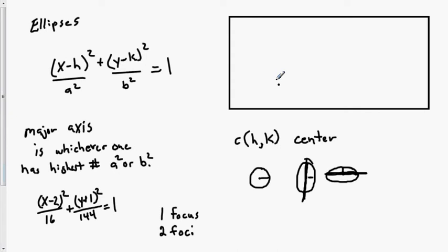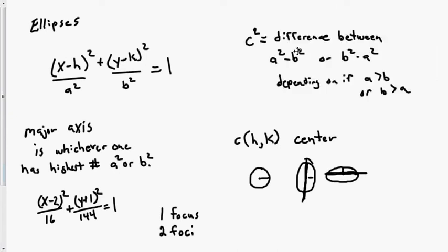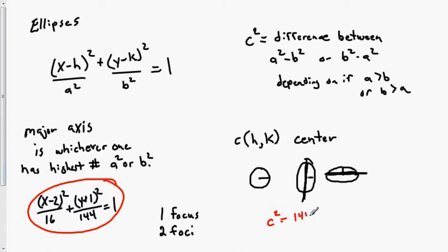Normally a squared plus b squared equals c squared, but for ellipses c squared equals the difference between a squared and b squared — that is, a squared minus b squared, or b squared minus a squared depending on which one is bigger. For the equation with b bigger than a, we'd use b squared minus a squared. For example, c squared equals 144 minus 16, which gives c squared equals 128, so c equals the square root of 128.